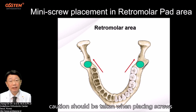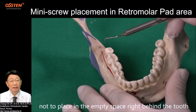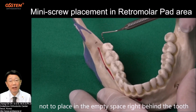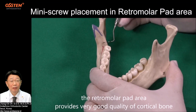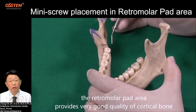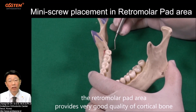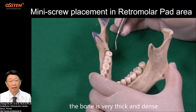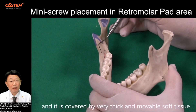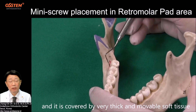Caution should be taken when placing screws — do not place them in the empty space right behind the tooth. The Retromolar Pad Area provides very good quality of cortical bone. The bone is very thick and dense, and it is covered by very thick and movable soft tissue.